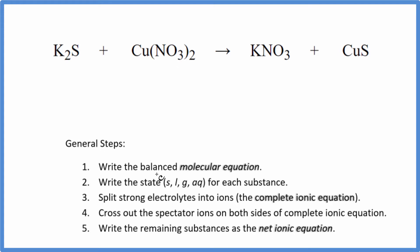So the first thing we need to do is balance the molecular equation. We can see that we have two potassium atoms here, just one here. Let's put a 2 here. They're balanced, but now we have two nitrates. But that's good. We have two nitrates here, and then we have sulfur, sulfur, and copper, copper. This is the balanced molecular equation.